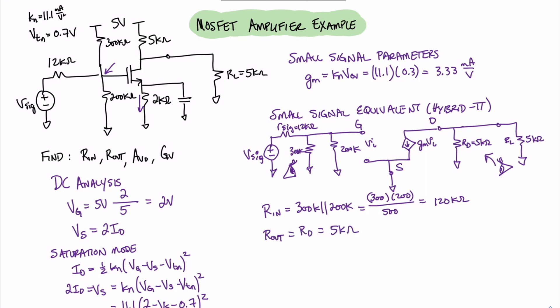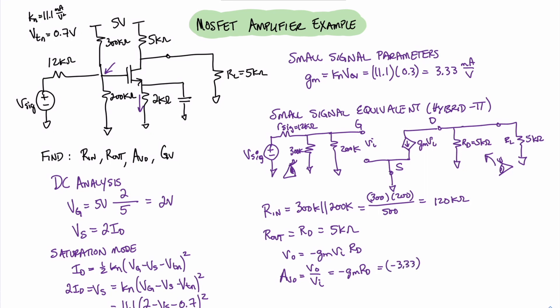Now we can solve for the gain. The open circuit gain includes only the drain resistor of 5 kilohms. The output voltage can be written as minus gm·vi times 5 kilohms. Moving vi over gives us the open circuit voltage gain, which equals minus gm·rd. Plugging in our values of 3.33 milliamps per volt for gm and 5 kilohms for rd, we find minus 16.65 volts per volt.